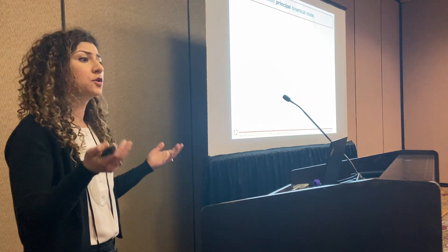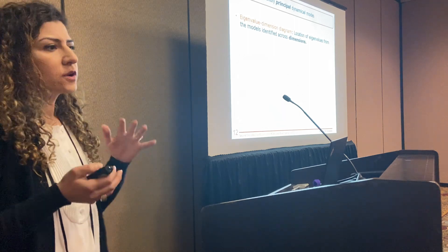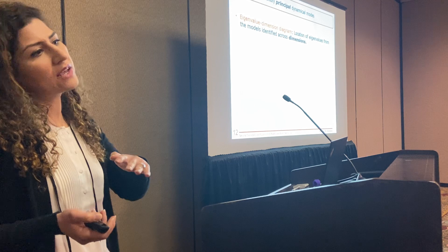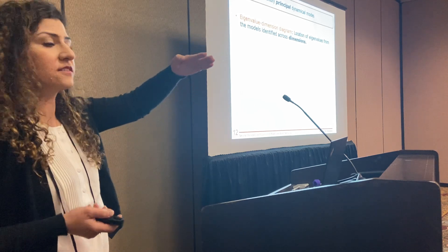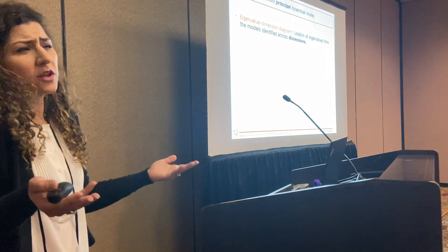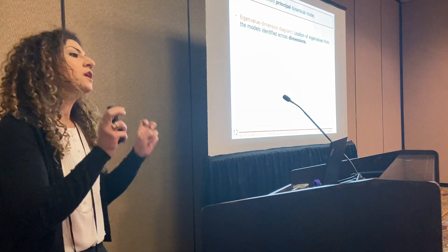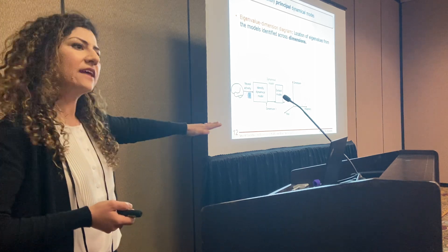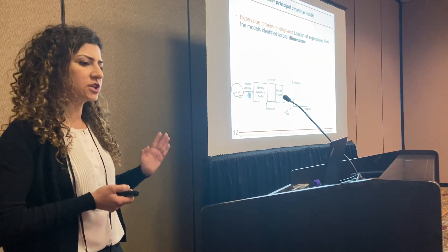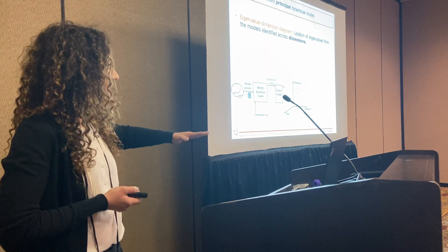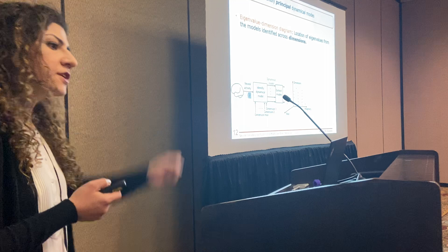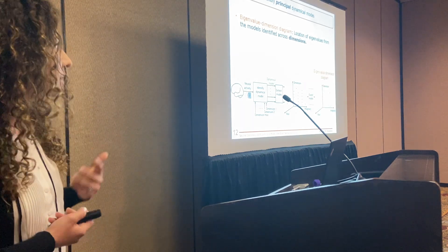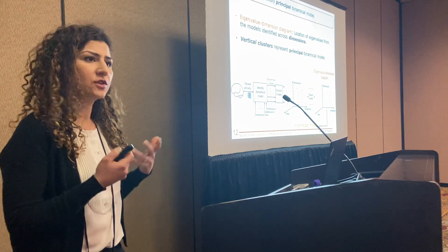To avoid being fooled by noise or model misidentification, we argue that real modes should be persistently present regardless of the latent state dimension. We construct an eigenvalue-dimension diagram: the XY axes are the imaginary and real components of eigenvalues, and the Z-axis is the latent state dimension. At each dimension we fit a model and sweep — what we look for are vertical clusters of eigenvalues that persist across dimensions. These are the principal modes that form the subject of our analysis.